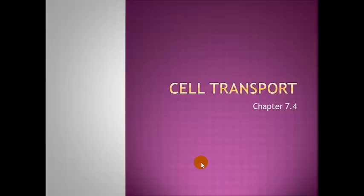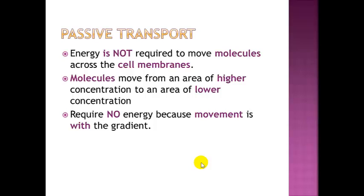Now we're going to talk about cell transport. There are two types: passive transport and active transport. Passive transport requires no energy at all — molecules move across the cell membrane from an area of high concentration to an area of low concentration. This movement is with the gradient. A good example is standing on an escalator going up — you don't need any energy. But if you turn around and try to walk down while it's going up, that requires a lot of energy because you're going against the gradient.